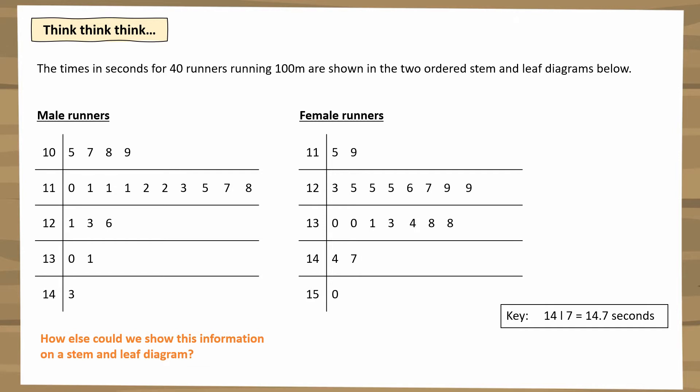Not using something like a bar chart or pie chart — not a different type of diagram entirely. How could we show this differently but still using a stem and leaf diagram? You can pause the video if you want to think about it and see if you can come up with the answer.